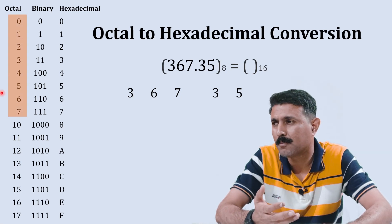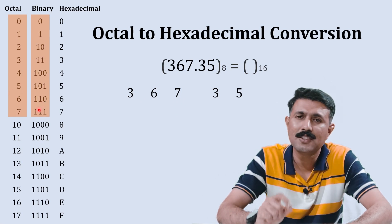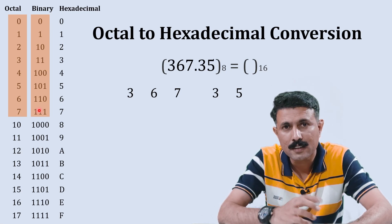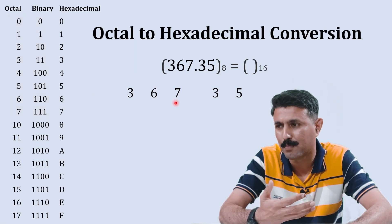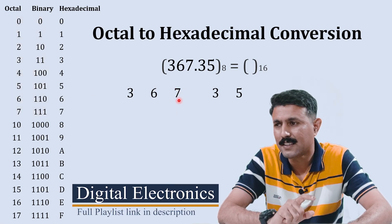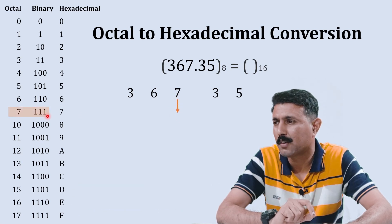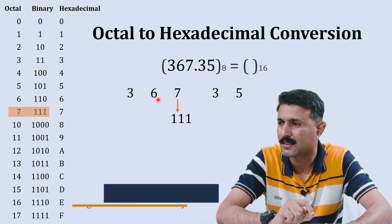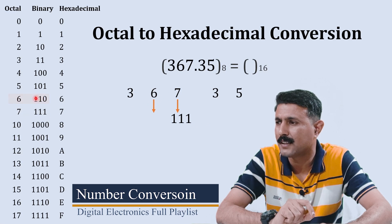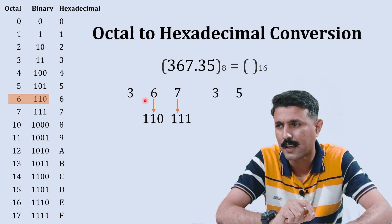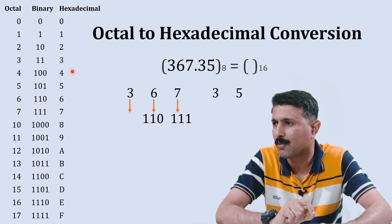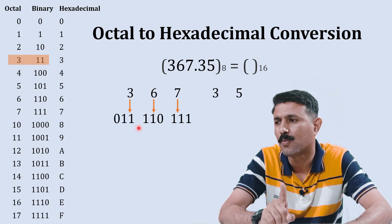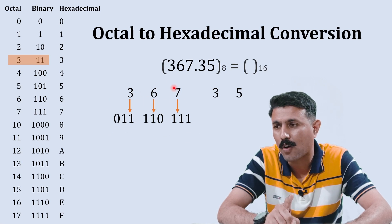As we know, the octal number can be represented as a three-digit binary number. To represent any individual octal digit, you require three bits. So we'll start with the least significant bit, which is seven. The binary equivalent of seven is one one one. The next number is six, and binary equivalent of six is one one zero. The third number is three — binary equivalent is zero one one.